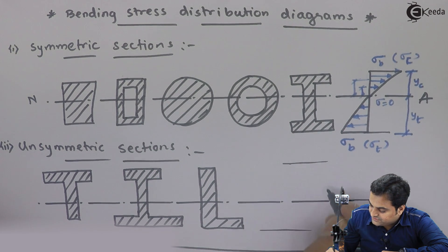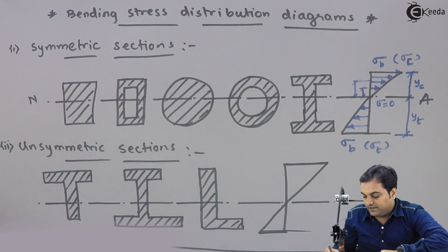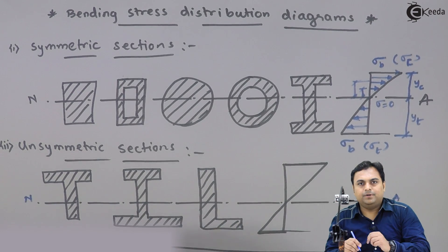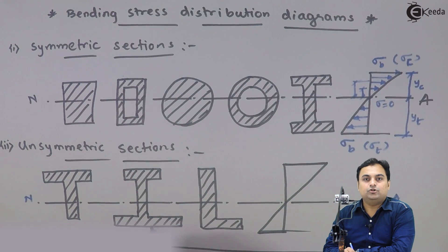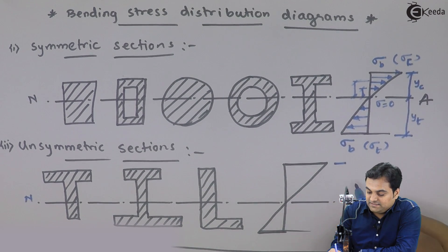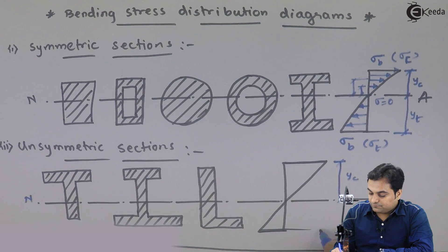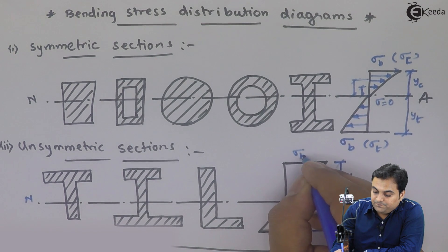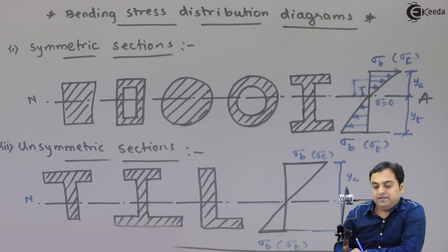Now let me show you the bending stress distribution for this. This is the bending stress distribution diagram. अभी I am considering the neutral axis. For unsymmetric sections also, we assume they are used as simply supported beams, so top layers होंगे compression में. YC is the depth of compression, or layers in compression. YT is the depth of layers which are in tension. Sigma B compressive stress is for layers in compression; Sigma T is for layers in tension.